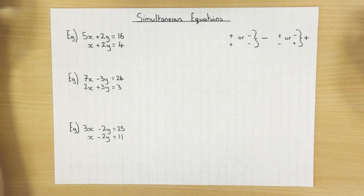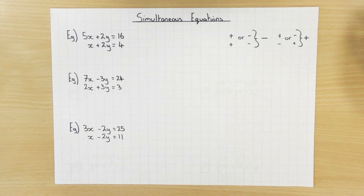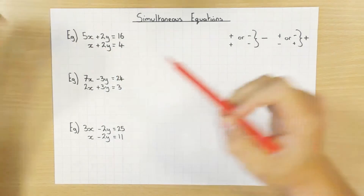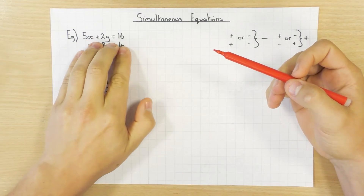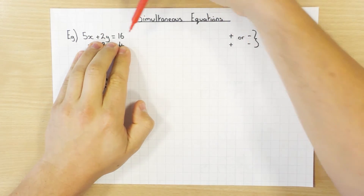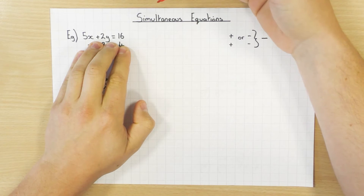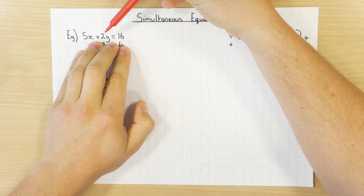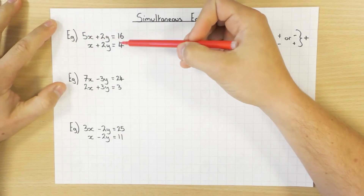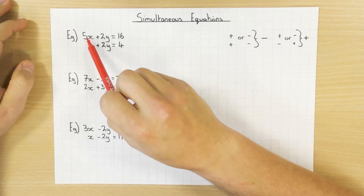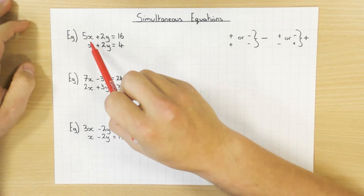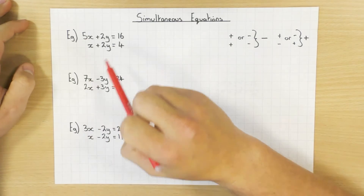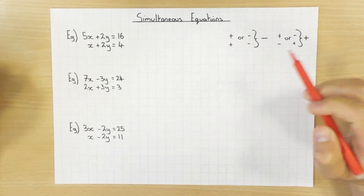In this video we're going to look at solving simultaneous equations. If I look at my first example here, just the first equation: 5x plus 2y equals 16. I can't solve that on its own because I've got two variables, x and y. So what you need is to have two equations. The x values are the same and the y values are the same. I'm going to solve these simultaneously, hence the name.